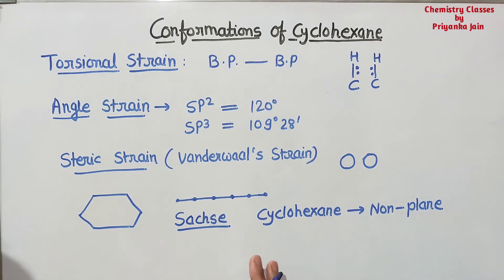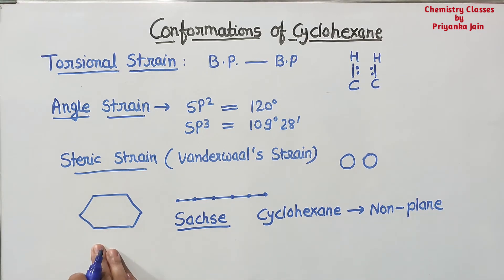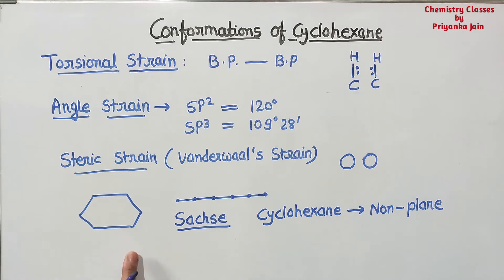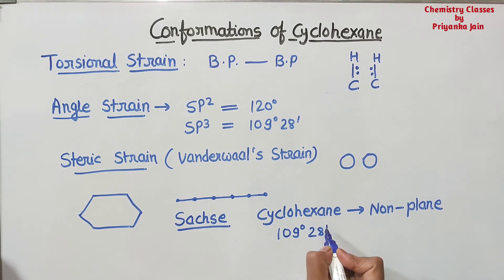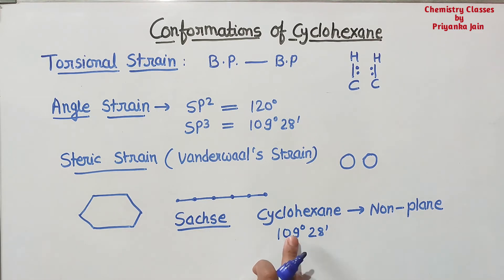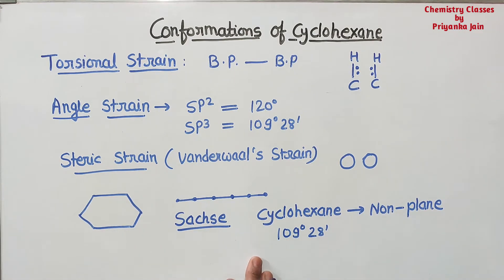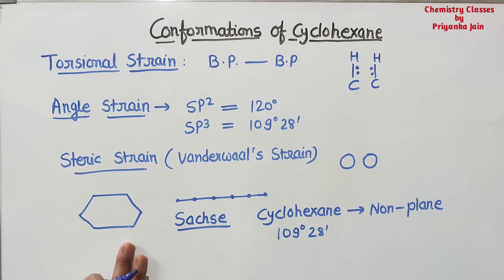Cyclohexane is actually somewhat puckered. So what happens is all the angles are now tetrahedral — all the angles are now 109 degrees and 28 minutes. When all angles are normal, there will be no strain in the molecule and the molecule will be quite stable.